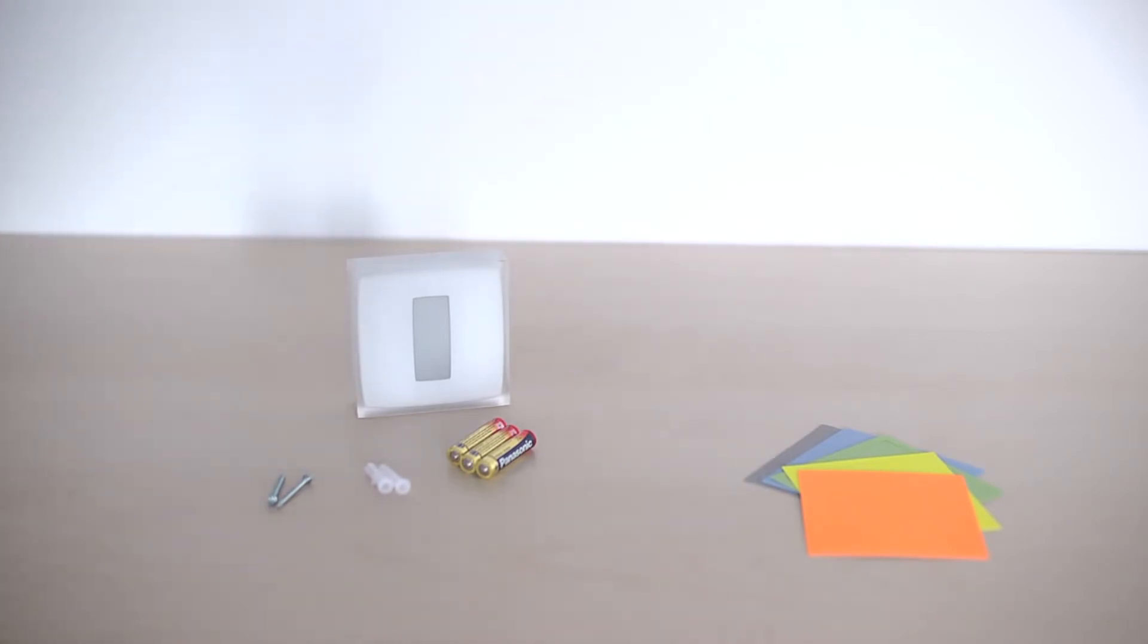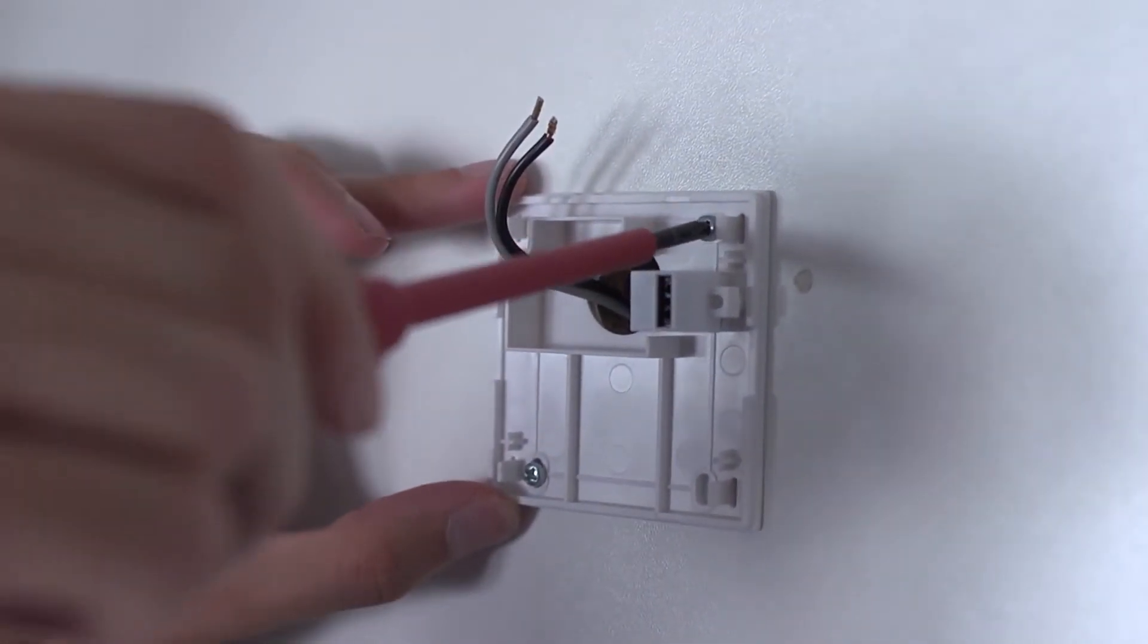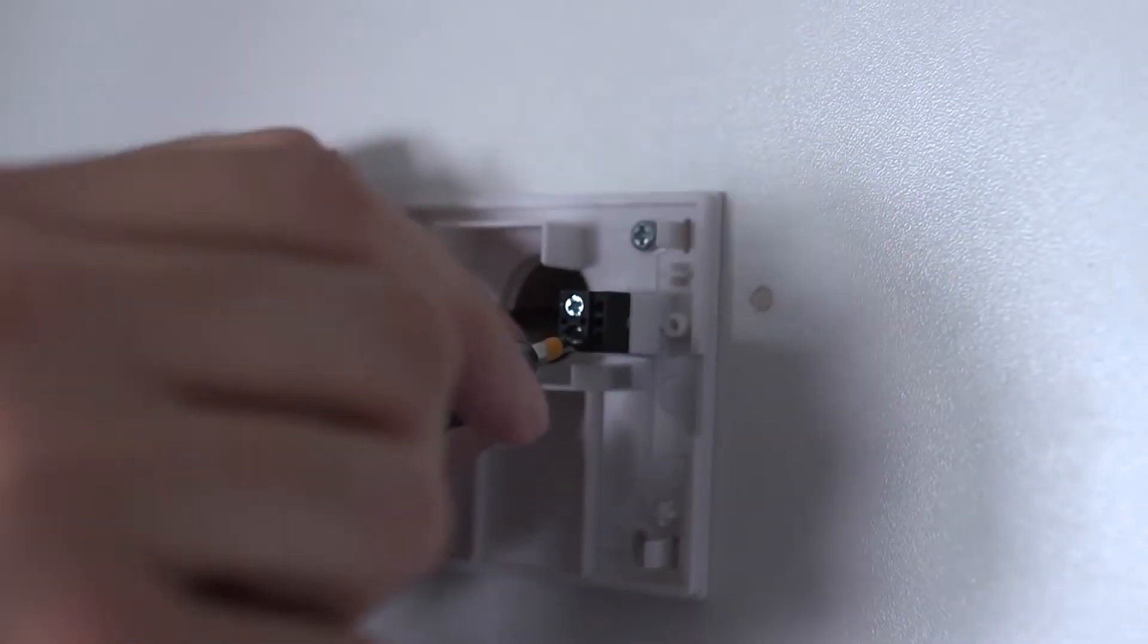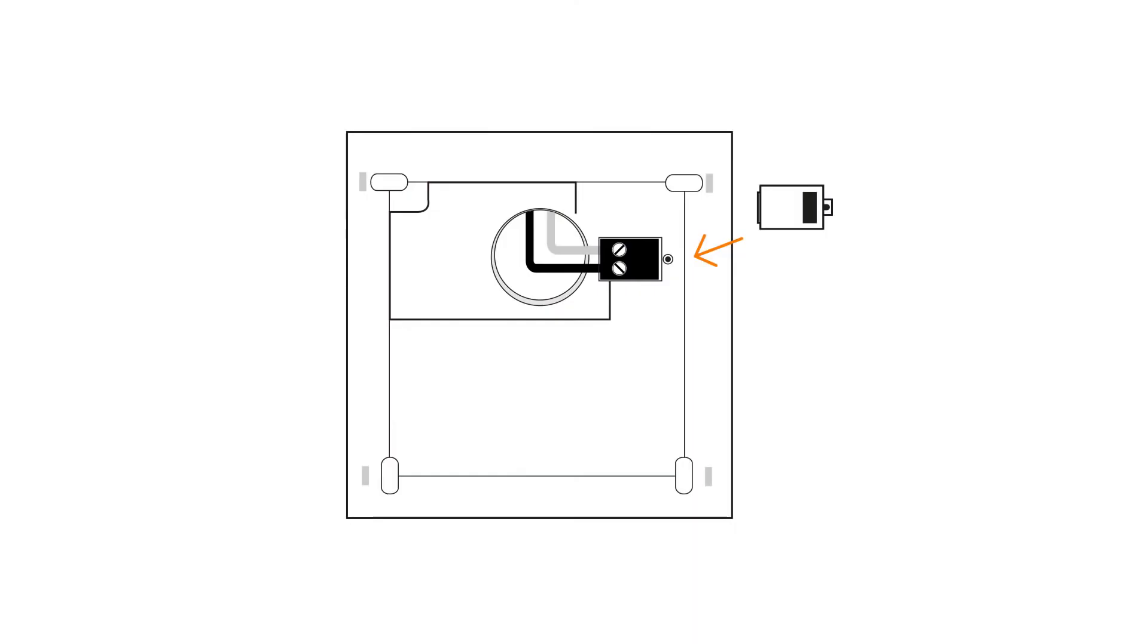Take the Natatmo mounting plate. Thread the wires through the mounting plate. Screw in the mounting plate to the wall. Plug in the two wires to the terminal block with the screwdriver. Put on the protection cover.